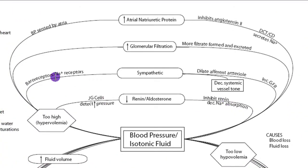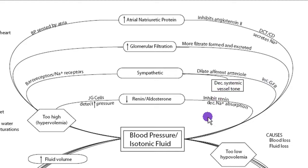Baroreceptors and sodium receptors inform the sympathetic nervous system, which dilates the afferent arteriole and can also decrease systemic vessel tone. Dilating the afferent arteriole increases glomerular filtration rate, increasing the amount of filtrate and therefore urine. This gets rid of the extra fluid and brings homeostasis back. Similarly, if there's increased fluid going through the kidney, that increases filtration pressure, more filtrate is formed, and more urine is excreted.